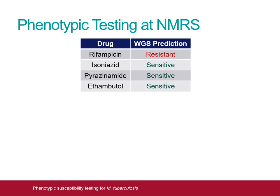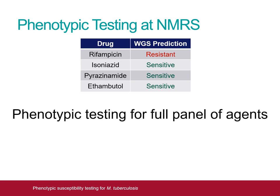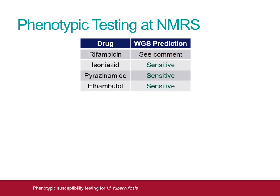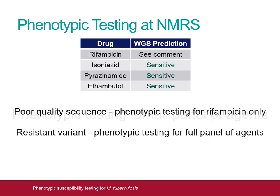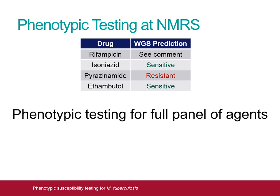If rifampicin is predicted to be resistant, phenotypic testing will be performed for the full panel of agents, no matter what predictions have been made for other first line agents. If isoniazid, pyrazinamide and ethambutol are predicted to be sensitive but the sequencing data for rifampicin is not definitive, the WGS data will be subjected to a close scientific and clinical review. If the sequencing data is deemed simply to be of poor quality — due, for example, to contamination with DNA from other bacterial species — phenotypic testing will be performed for rifampicin alone. However, if the sequencing data instead suggests the possible presence of both sensitive and resistant strains of TB, phenotypic testing will be performed for a full panel of agents. This will also be performed if any other first line drug is predicted to be resistant or has a poor quality sequence.